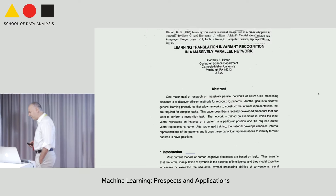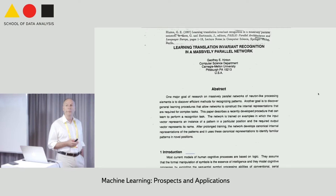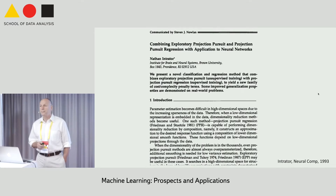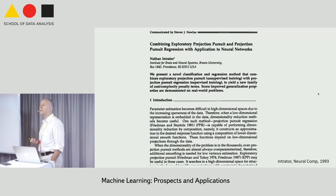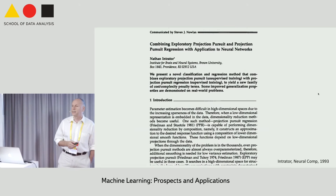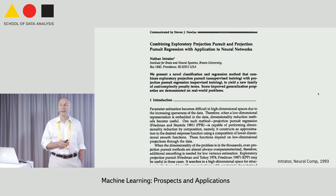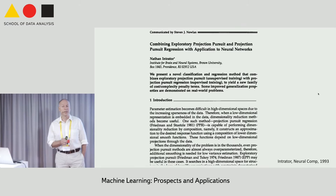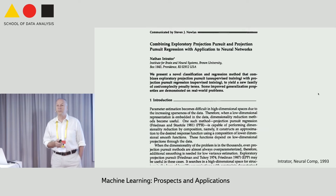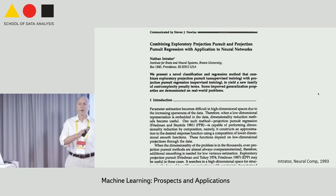Both these papers really talk about, one, auto-encoding, and two, training for some kind of invariance. That was intriguing, and a few years later I realized that this idea of putting bias into hidden units — into the weight of hidden units — can be taken in very many directions. Just two years before that, I discovered a certain unsupervised learning rule that had to do with synaptic modification — really a neuroscience kind of analysis.